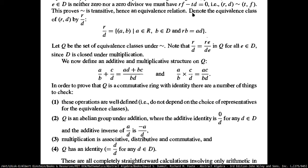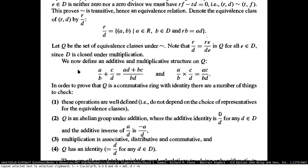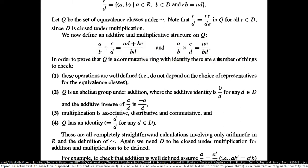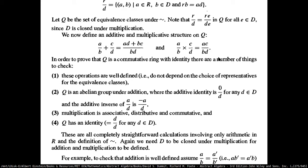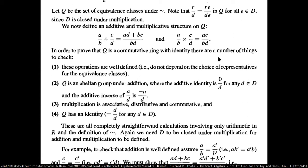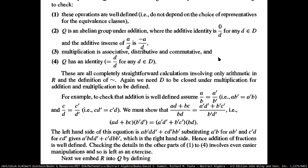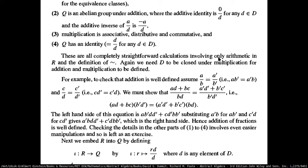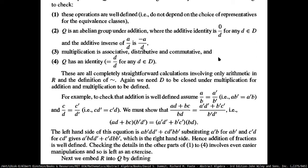You insert this fraction notation for this equivalence relation and define the additive and multiplicative structure likewise. You're essentially trying to make an abstract commutative ring into the ring of fractions. You define addition and multiplication likewise, then check if they are commutative and actually a ring. You need D to be closed under multiplication and that you can add and multiply stuff there. This will give you the well-defined equivalence relation for having fractions.